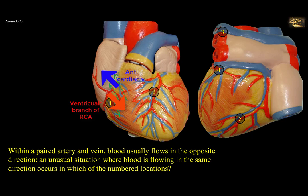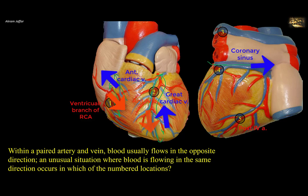Location 2 is the anterior interventricular branch of the left coronary artery. The arrow represents the direction of arterial blood towards the apex of the heart. The artery proceeds around the heart on the inferior surface where it anastomoses with the posterior interventricular artery. It is accompanied by the great cardiac vein, which carries blood up from the apex of the heart, moves toward the left border, and then passes around the left border to continue as the coronary sinus. Again, the blood in the artery and vein at location 2 are in opposite directions.